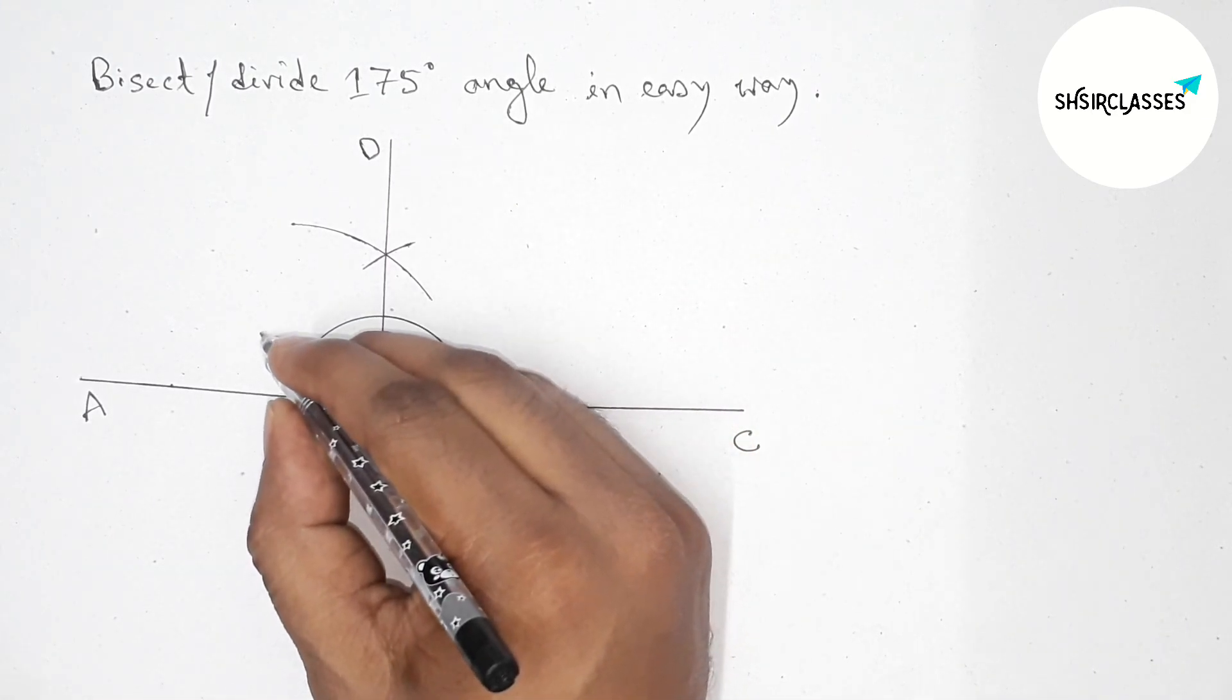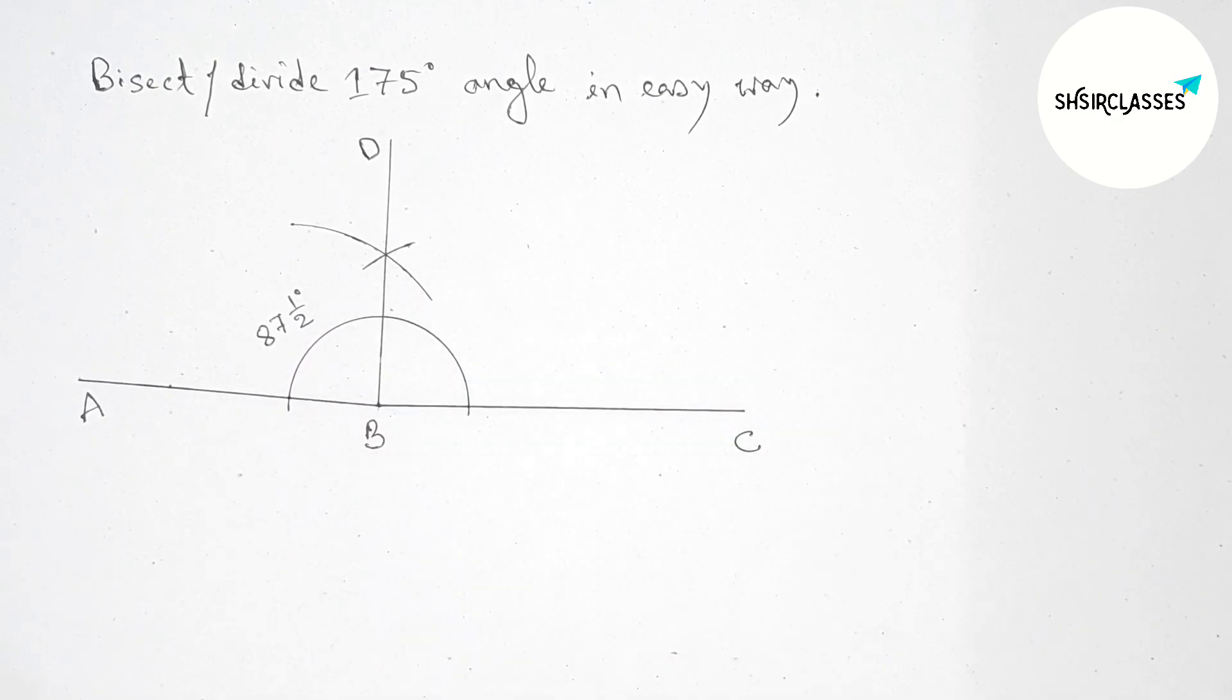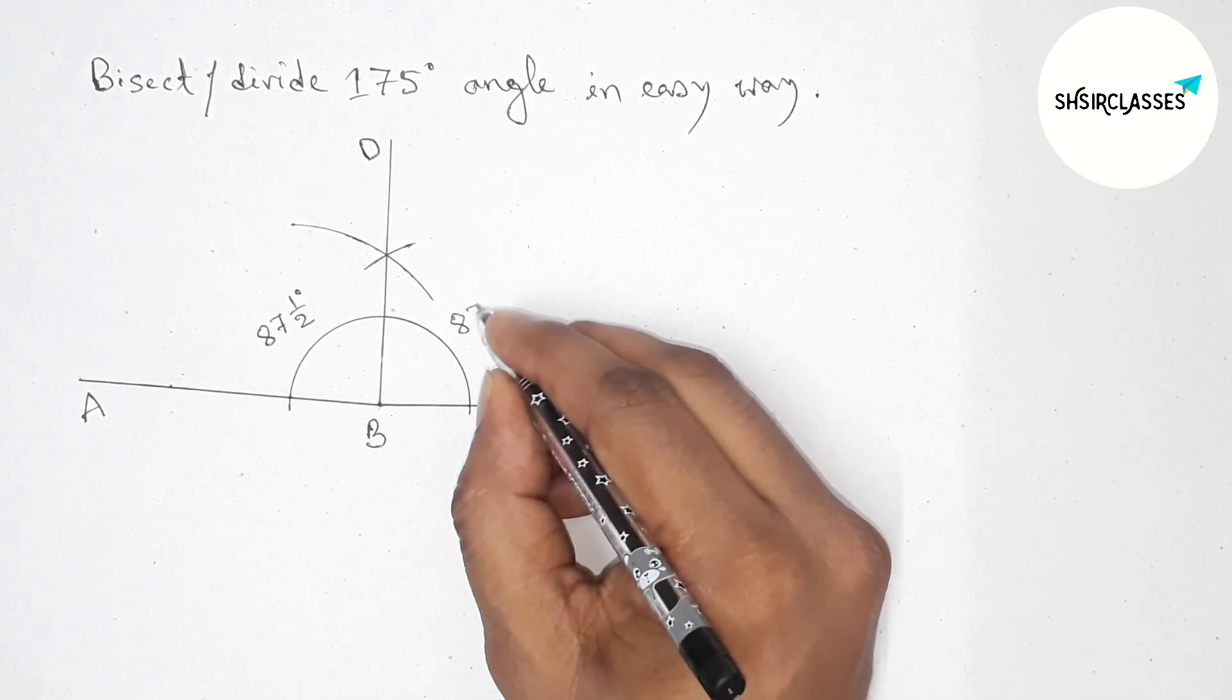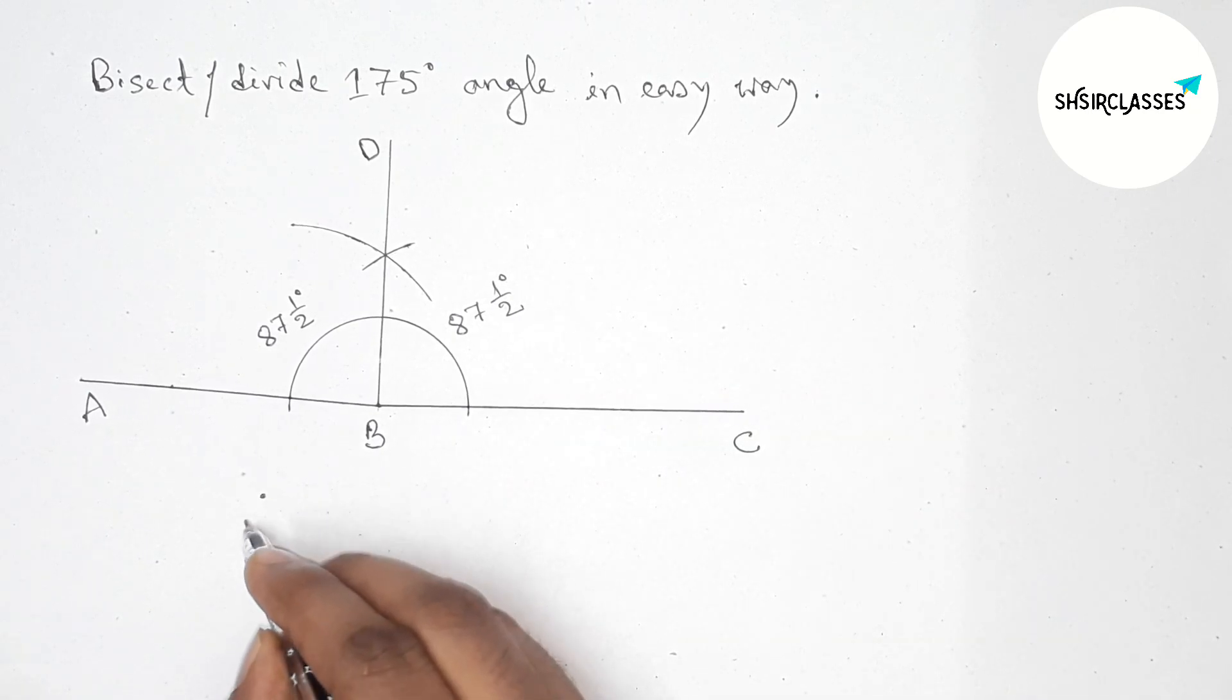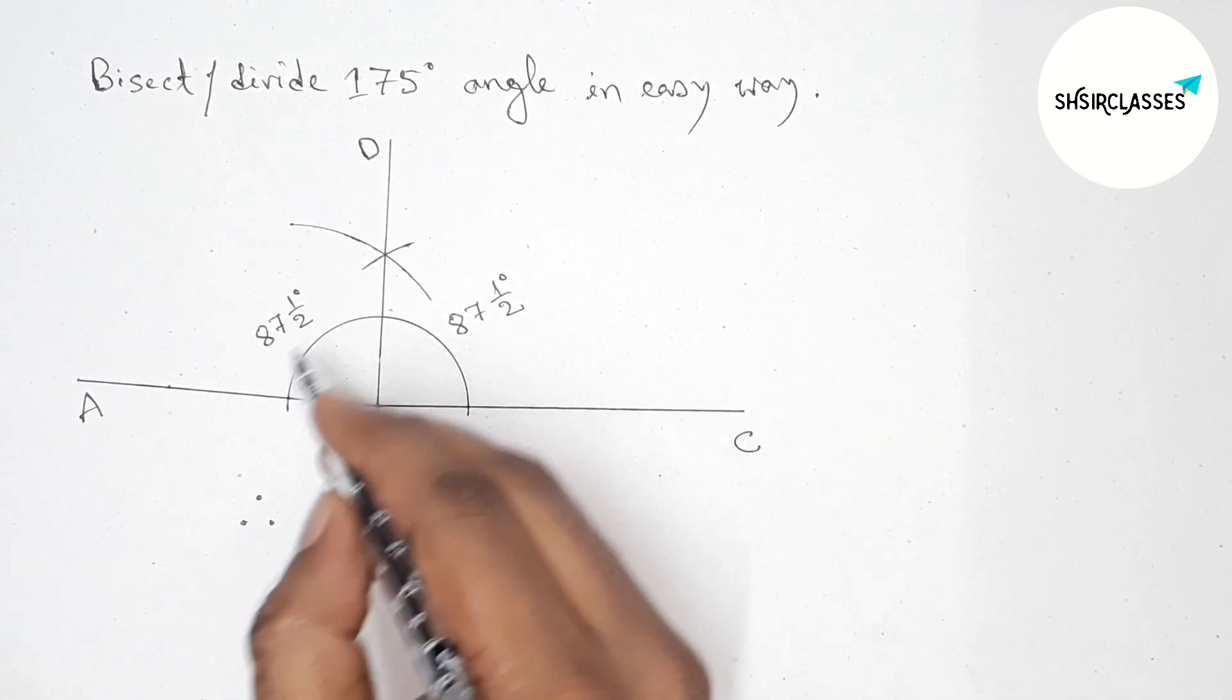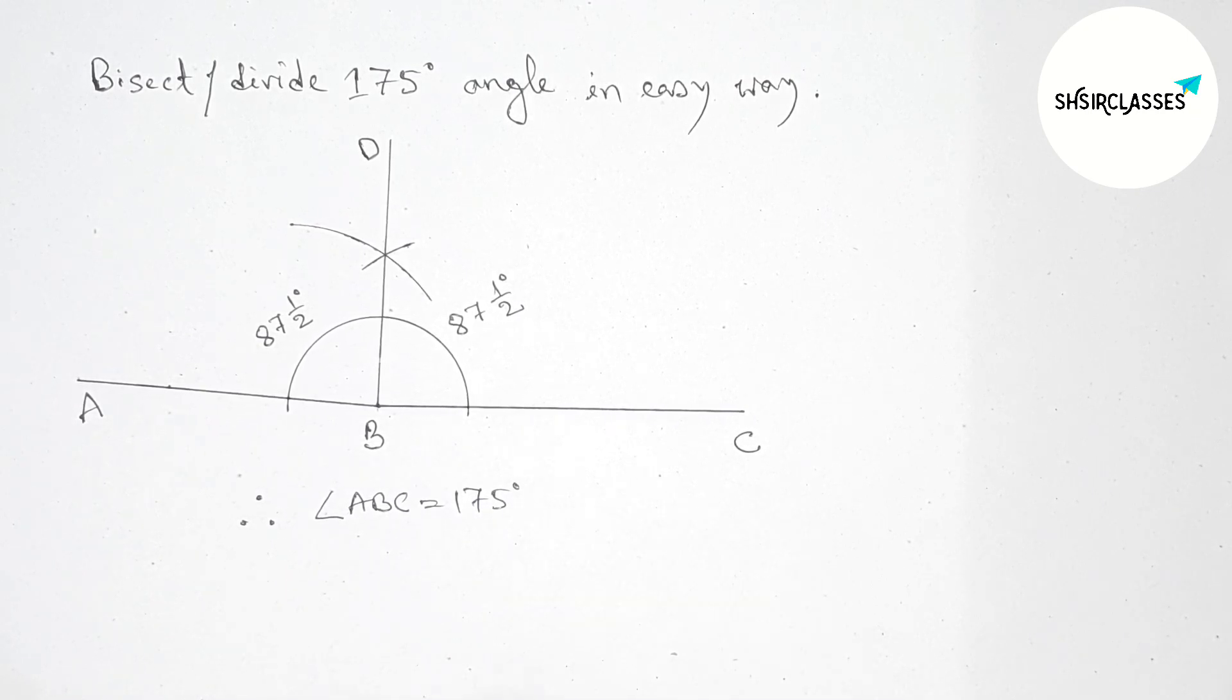Okay, so here angle ABD, this is 87 1/2 degree, and angle DBC, this is also 87 1/2 degree. Okay, so now therefore angle ABC, this is 175 degree.